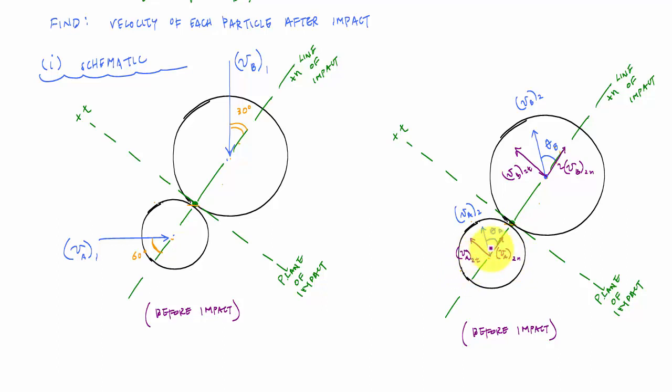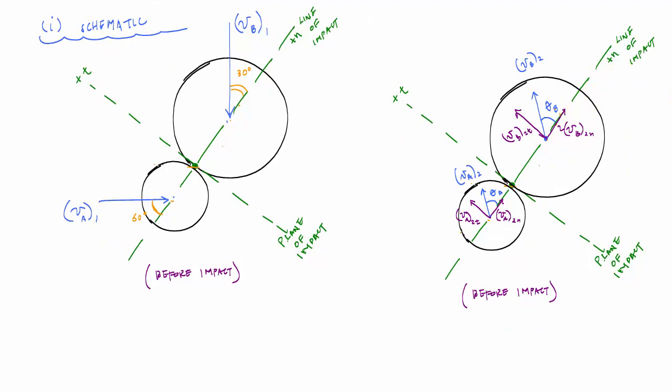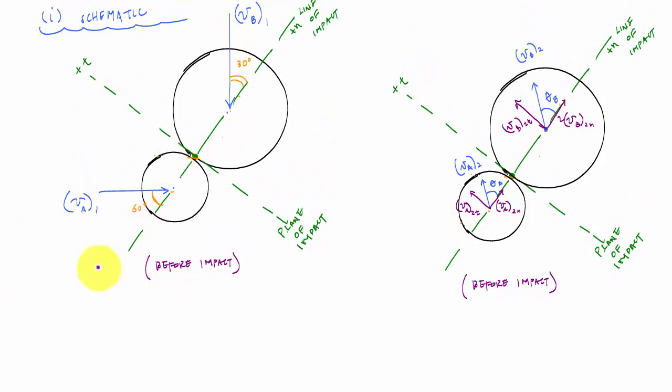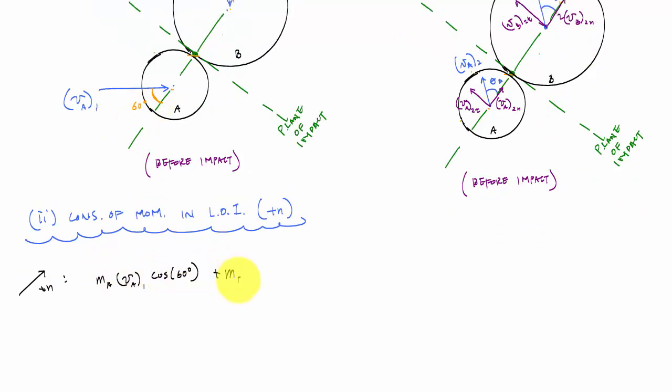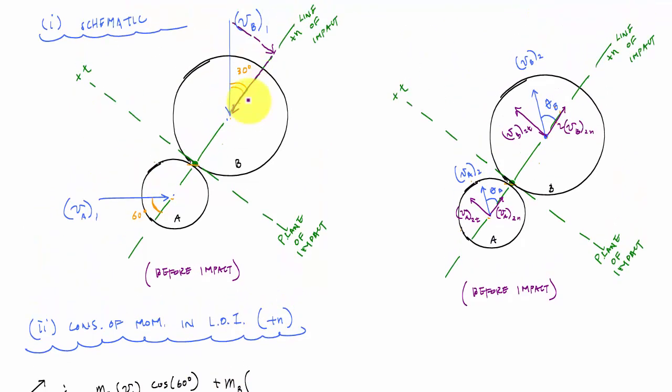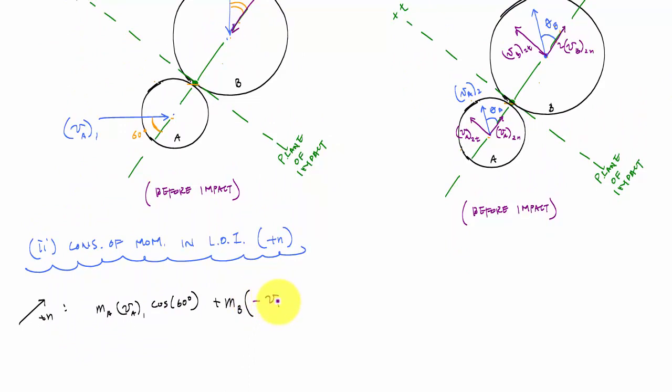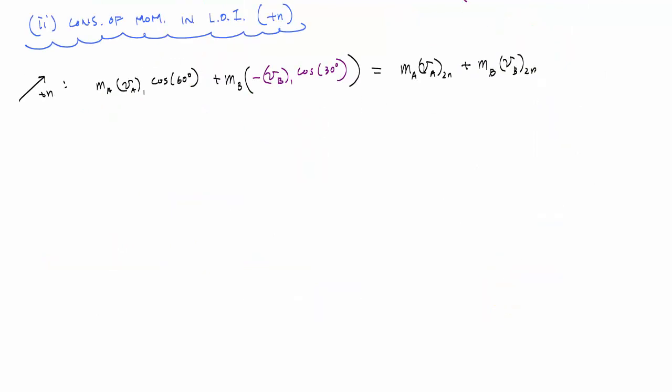All right, so now that we have the schematic, if we understand the schematic, you could tell we have four unknowns. So hopefully we'll have four equations. First relationship that we're going to apply is for the entire system in the direction or in the line of impact, we're going to apply conservation of momentum. Or this would be in the plus N direction. I would have MA VA1 cosine of 60 degrees plus MB, and this velocity vector, the N component, is in the negative N direction, so I would write negative VB1 cosine of 30 degrees is equal to MA VA2N plus MB VB2N. So there's my one equation. I do know the masses, I do know the velocities. This is one equation with two unknowns.